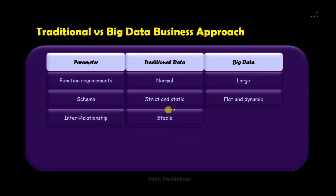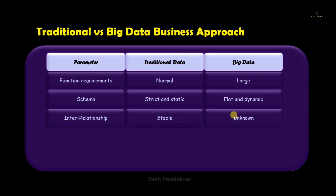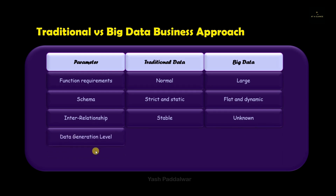The next parameter is the interrelationship among the attributes. In the traditional approach, there is a static interrelationship because the data is structured. In the big data approach, the interrelationship is unknown because there might be unstructured data in which no entity relationship is defined.